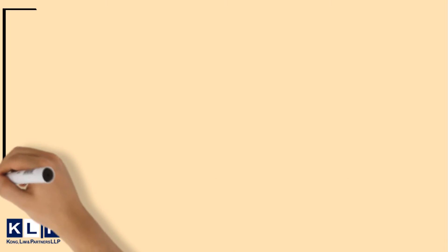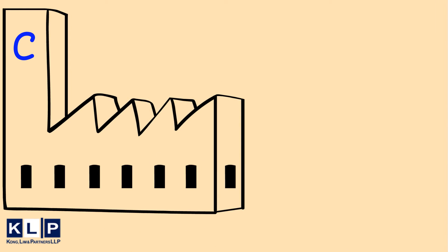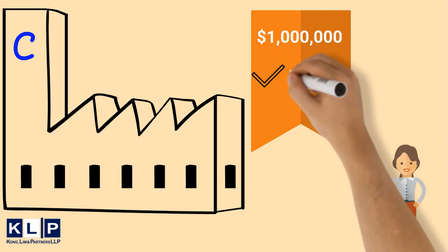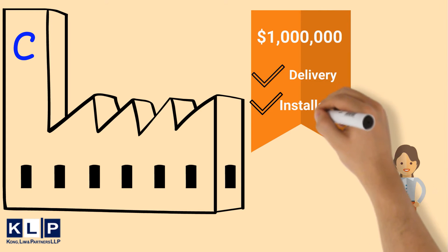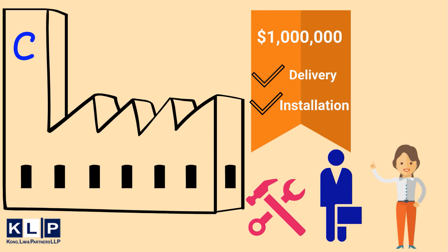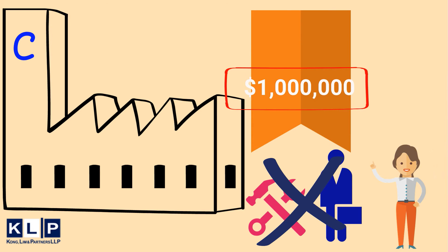This example will help you understand this better. Company C, a manufacturing company, enters into a contract with a customer to supply equipment at a transaction price of $1 million, payable upon delivery and installation. This price is inclusive of installation and training. Company C charges the same price regardless of whether installation and training is performed or not. Therefore, the $1 million is the stand-alone selling price for the equipment.